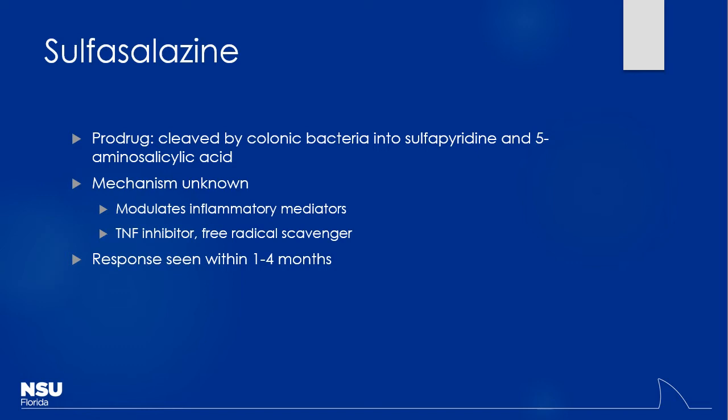Sulfasalazine — we talked about this before because it gets activated as a prodrug by colonic bacteria, turning into sulfapyridine and 5-aminosalicylic acid. It can be absorbed and have anti-inflammatory actions. Response is pretty variable, say within one to four months. By having that salicylate along with sulfapyridine, it helps modulate inflammatory mediators and inhibits TNF-alpha — maybe not as significantly as a monoclonal antibody, but it also acts as a free radical scavenger, picking up reactive oxygen species and preventing further joint damage.